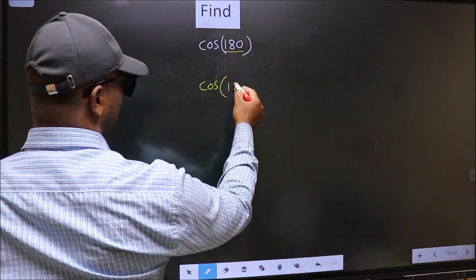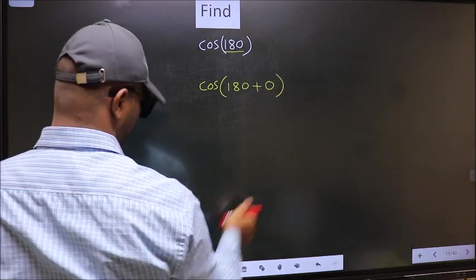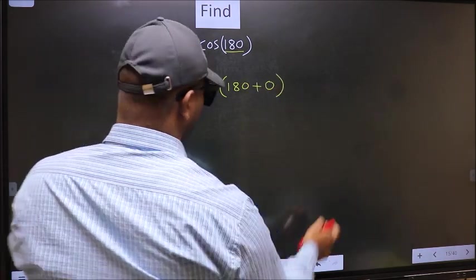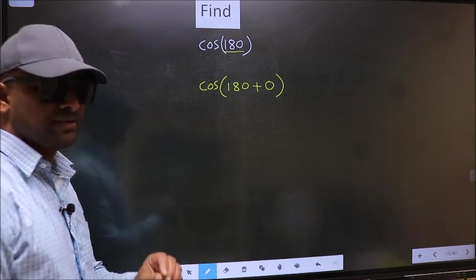we should write 180 plus 0. This is step 1.